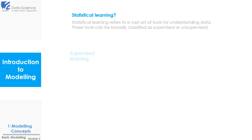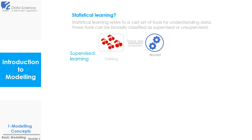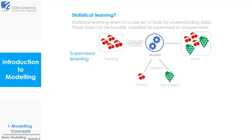In supervised learning, we have our training data on which we train our model. For example, we have data that captures the properties of a cherry, such as shape, color, etc. Now we will train our model on this data. Once our model is trained and fine-tuned, we will give it an input that has cherries and grapes. Now that our model is trained and knows how a cherry looks like, it will be able to identify the fruit and will classify the new data as cherry or not a cherry. This is called supervised learning.